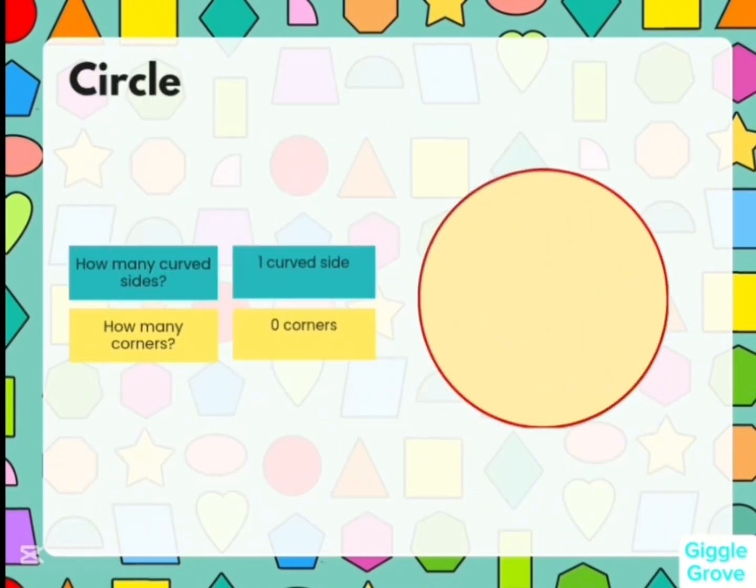Let's talk about the circle. How many curved sides? How many corners? One curved side and zero corners.